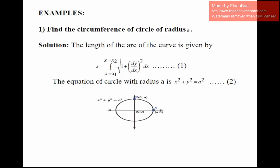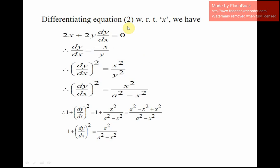We need the value of √(1 + (dy/dx)²). Differentiating equation 2 — which is x² + y² = a² — with respect to x, the derivative of x² is 2x and the derivative of y² is 2y·(dy/dx), which equals 0. We find dy/dx = −x/y. Squaring both sides gives (dy/dx)² = x²/y².